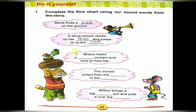Third one: Bono hears a dash scream and runs to help her. Scream means make a loud high-pitched sound. Bono hears a loud scream and runs to help her. Fourth one: The mouse jumps from the dash to the dash. The mouse jumps from the couch to the ground. C-O-U-C-H couch. G-R-O-U-N-D ground. These also are OU sound words.